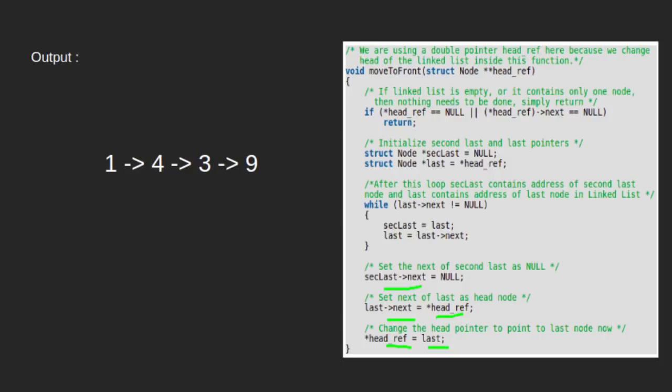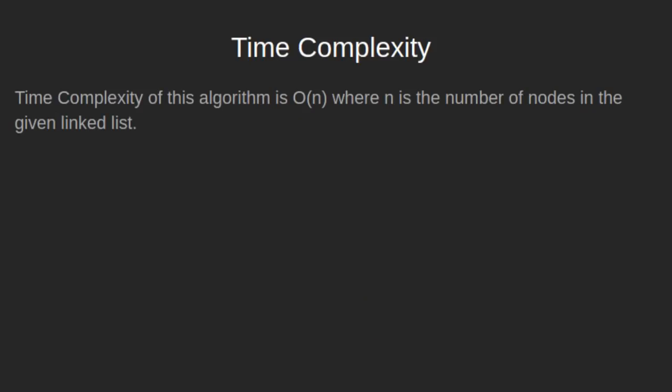This verifies our algorithm for moving the last element to the front of a given linked list. The time complexity of this algorithm is O(n), where n is the number of nodes in the given linked list. With this, we end our tutorial. Thank you for watching. Please leave us your likes and comments.